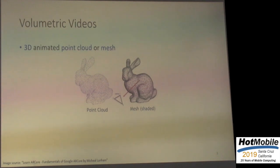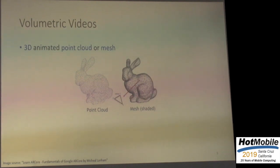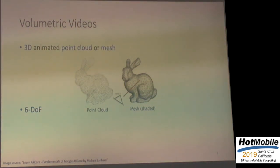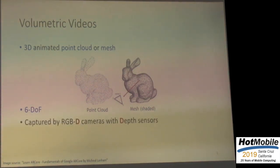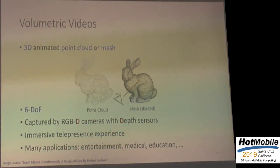In this paper, we consider a new type of video content called volumetric videos. They basically consist of 3D animated point clouds or meshes. For point cloud, each element is called a vertex, which is a three-dimensional point in 3D space with X, Y, Z coordinates and color. For mesh, it consists of a large number of polygons also in 3D space. These points and polygons change over time, frame by frame. It's 6DOF — users can control not only roll, pitch, and yaw, but also the camera position. These videos are captured by cameras with depth sensors, providing a truly immersive telepresence experience, with applications in entertainment, medical, and education.